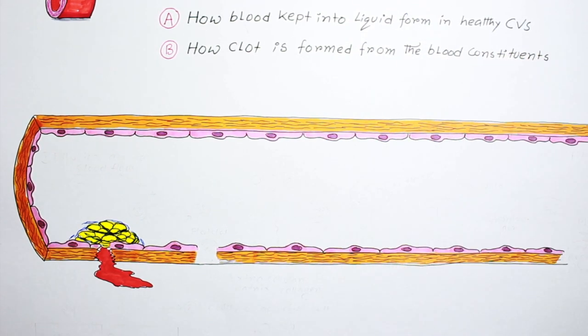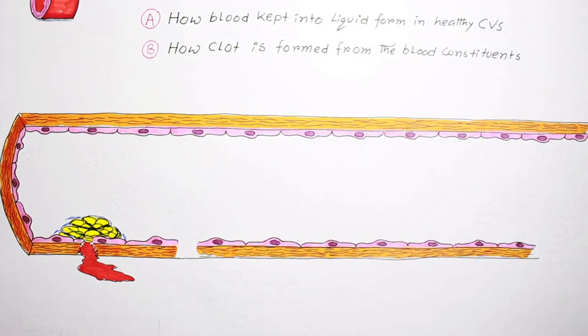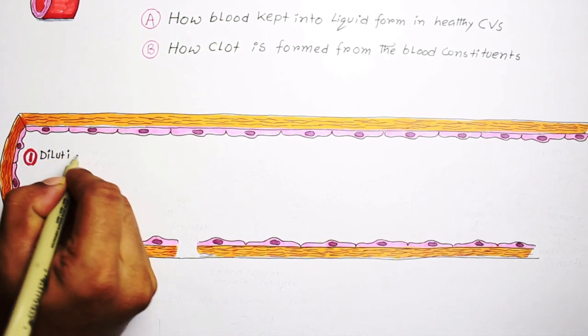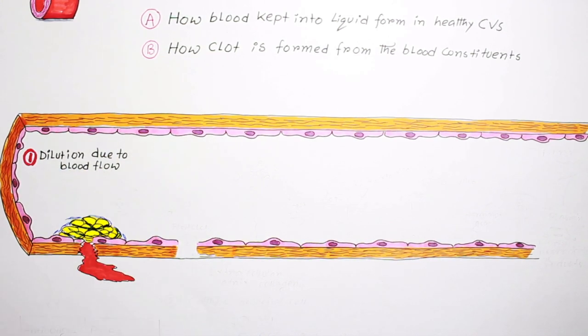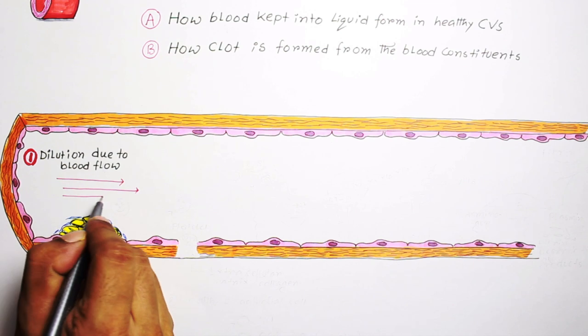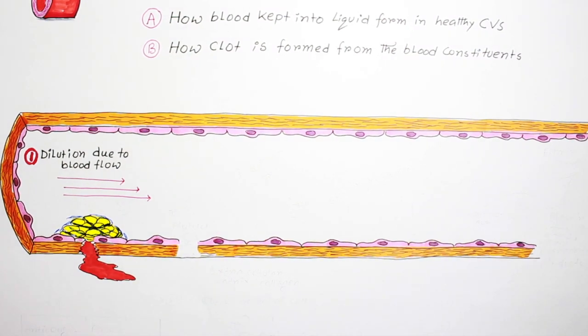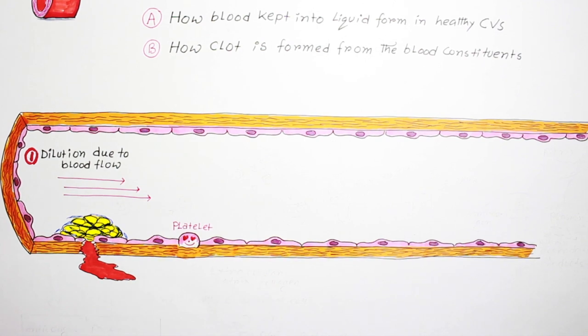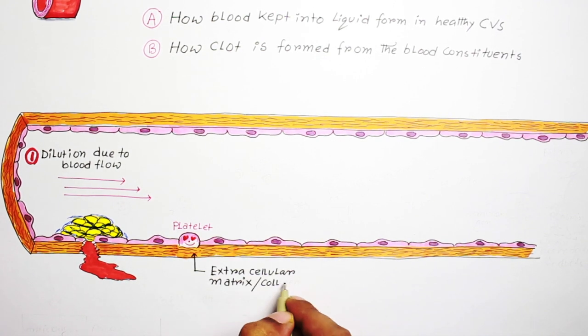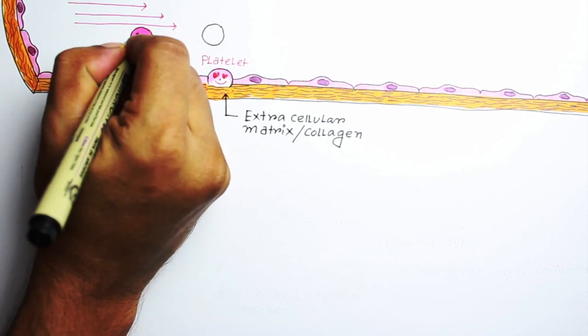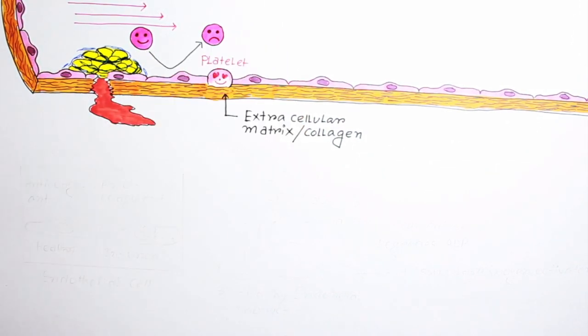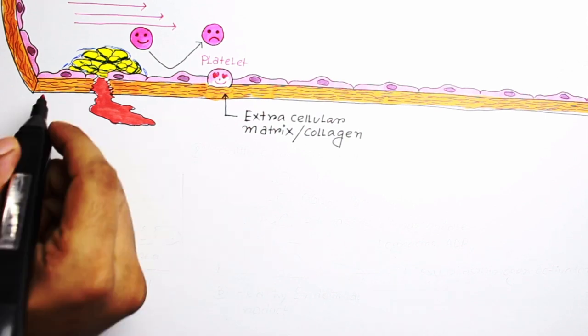The very first thing is simple dilution. Blood flowing past the site of injury washes out the activated coagulation factors, which are rapidly removed by the liver. Platelets love to bind with the extracellular matrix or underlying collagen, so it is necessary to maintain a healthy endothelial cell layer to prevent unwanted platelet plug formation.